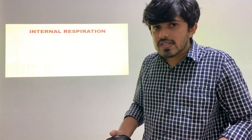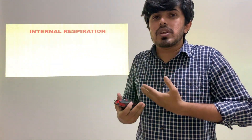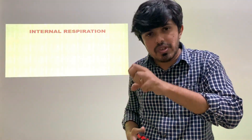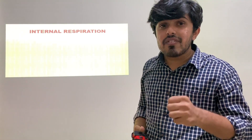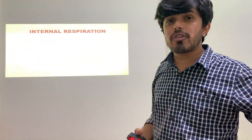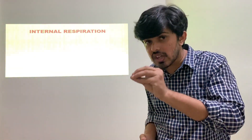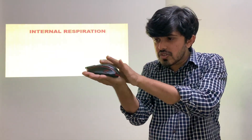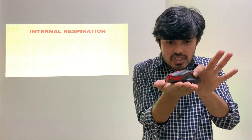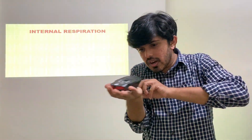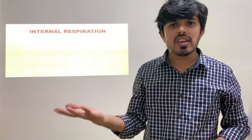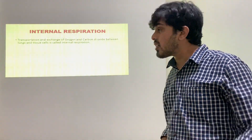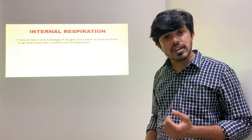Now let us see internal respiration. When we breathe in, oxygen enters through the lungs. Every cell in our body needs oxygen. From the lungs, blood vessels — specifically RBCs — carry oxygen to each and every part of the body. This is transportation. The oxygen goes from lungs via RBC to each cell, and carbon dioxide comes back from cells to the lungs. This transportation and exchange of oxygen and carbon dioxide between lungs and tissue cells is called internal respiration.